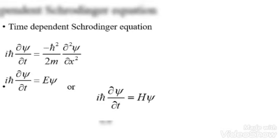Now let's circle back to the time-independent Schrödinger equation. As you may remember, the Hamiltonian of the system was related to the energy of the system. By using those concepts, you can rewrite Schrödinger's equation, and the final result is as mentioned here.